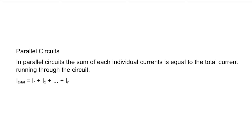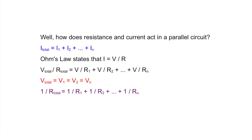Now let's discuss parallel circuits. In parallel circuits, the sum of each individual current is equal to the total current running through the circuit. Mathematically, current total is equal to current 1 plus current 2, and so on.